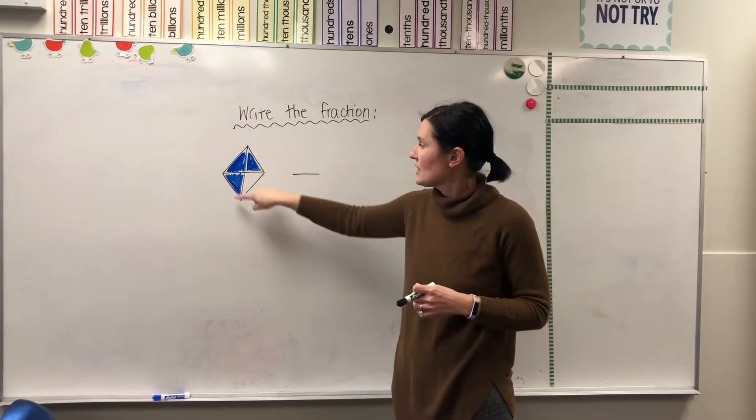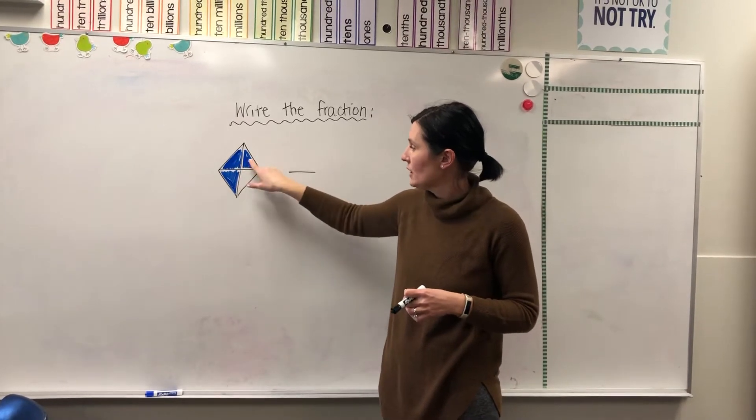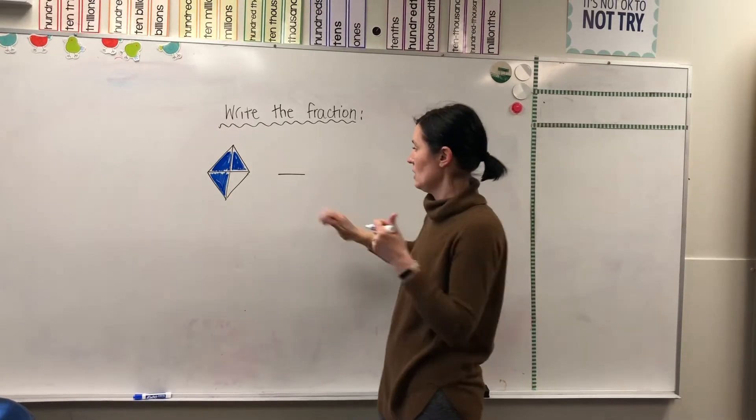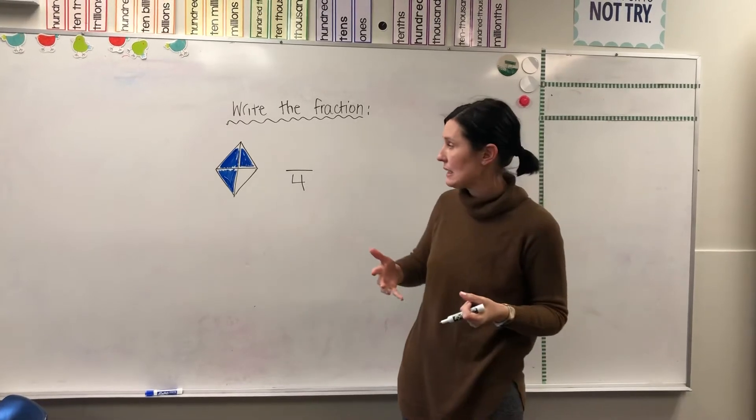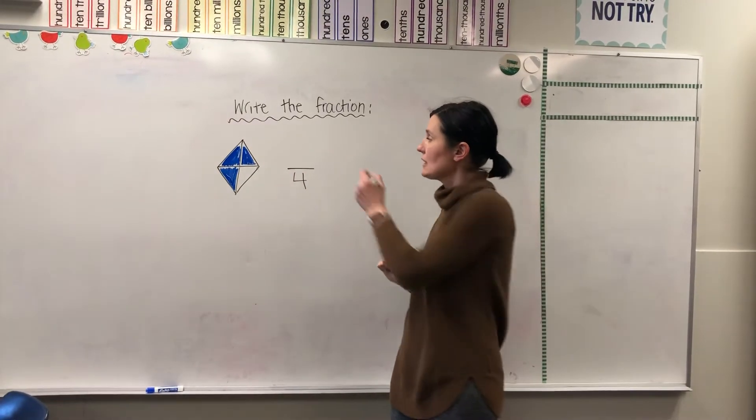So this lovely diamond is split up into one, two, three, four parts in total, so that's going to be our denominator. And how many parts are shaded in? We count one, two, three, so that's going to be our numerator.